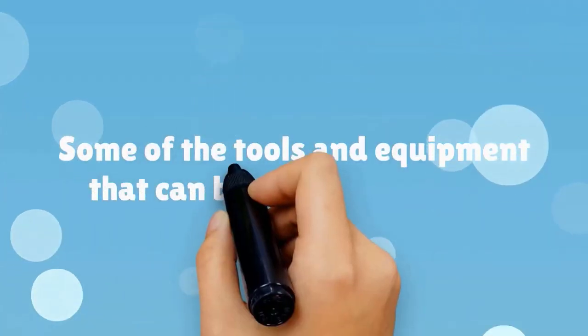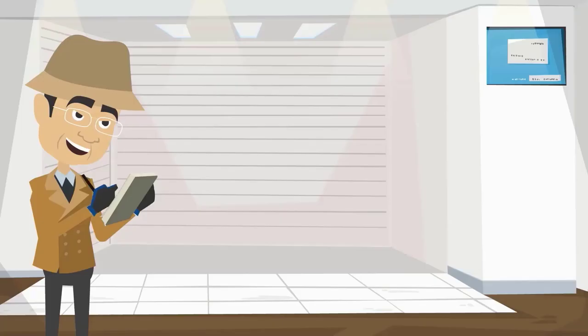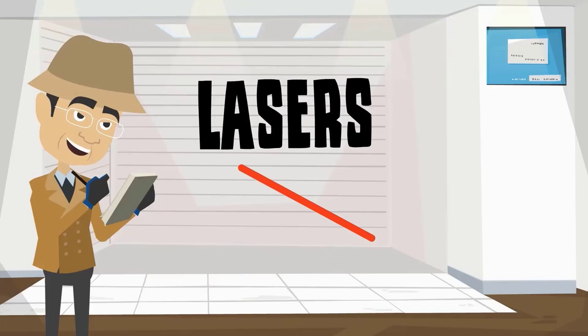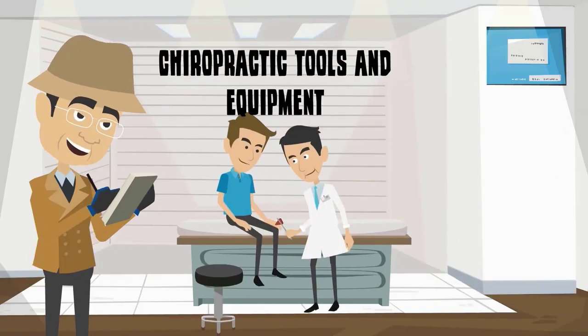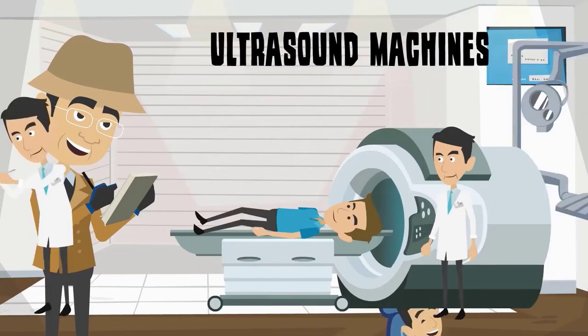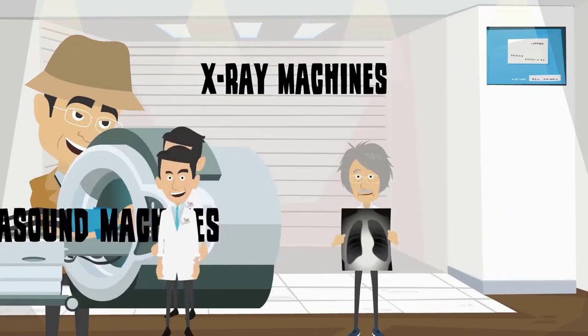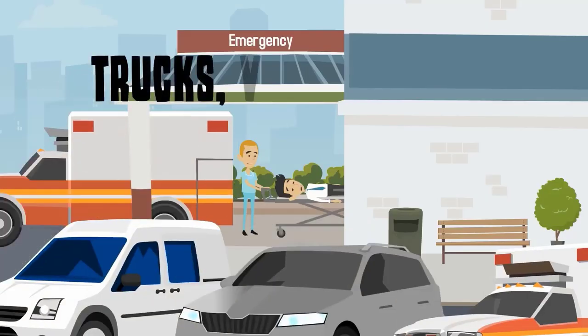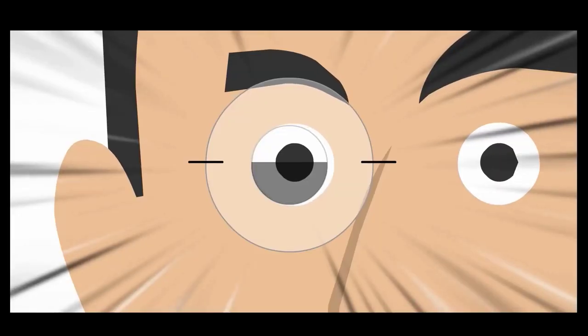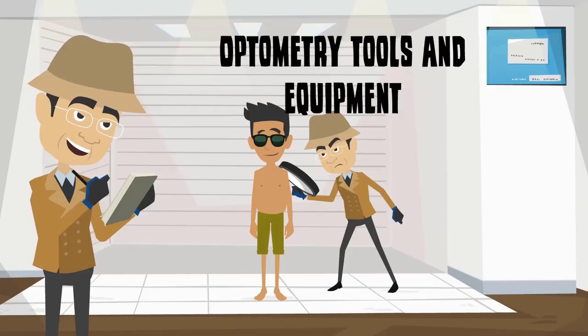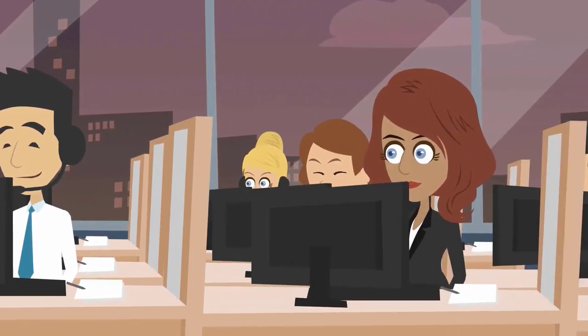Some of the tools and equipment that can be leased include wheelchairs, lasers, chiropractic tools and equipment, dental tools and equipment, ultrasound machines, x-ray machines, trucks, vans and other vehicles, optometry tools and equipment, dermatology tools and equipment, and medical hardware and software.